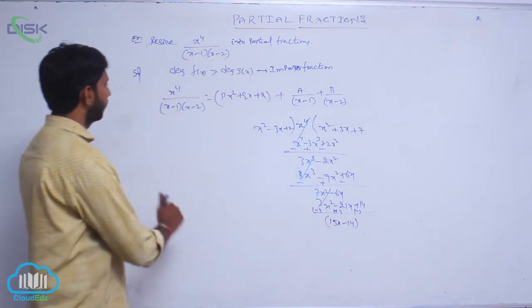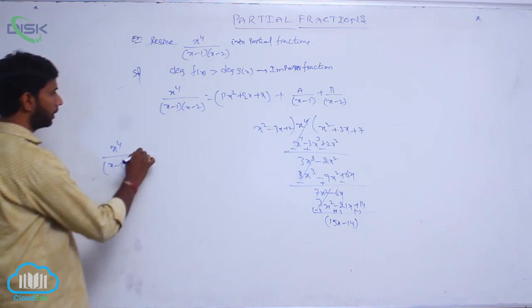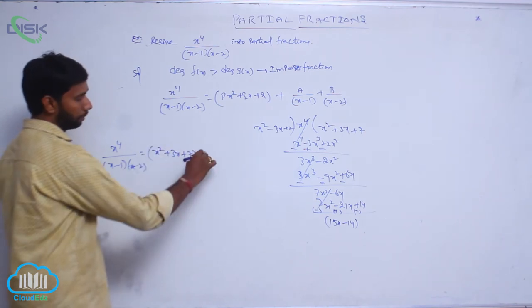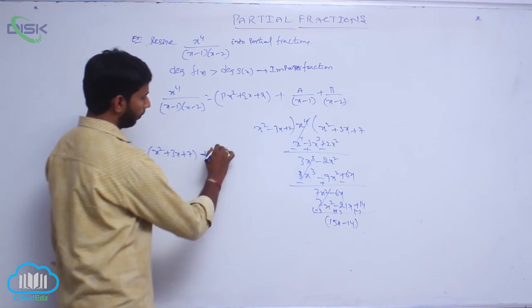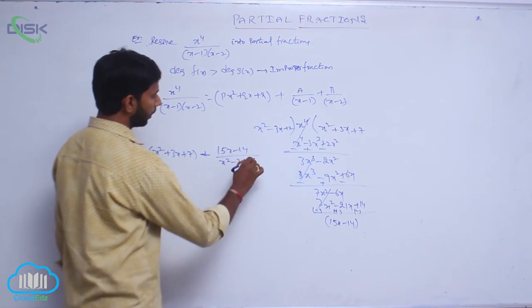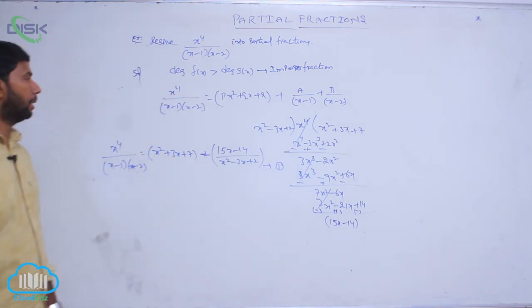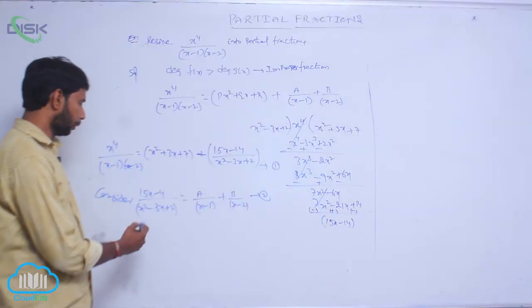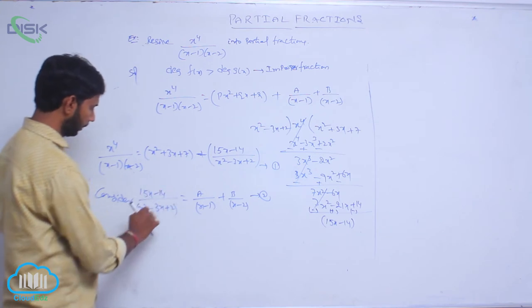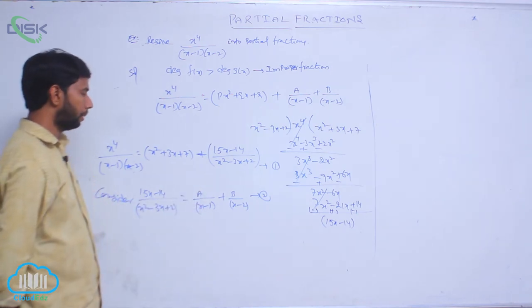The remainder is 15x minus 14. So x to the power 4 by (x minus 1)(x minus 2) can be written as x squared plus 3x plus 7, plus (15x minus 14) by (x squared minus 3x plus 2) — consider this as condition number 1. Now consider (15x minus 14) by (x squared minus 3x plus 2) equal to A by (x minus 1) plus B by (x minus 2) — condition number 2.